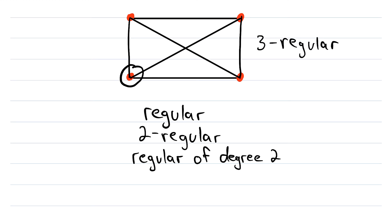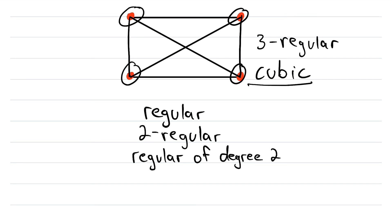Looking at this bottom left vertex, for example, it's incident to one, two, three edges, and equivalently, it's adjacent to one, two, three vertices. Now, if a graph is 3-regular, we can also say that the graph is cubic. So, a cubic graph is a graph that is 3-regular. Any graph where all of its vertices have degree 3 is a cubic graph.